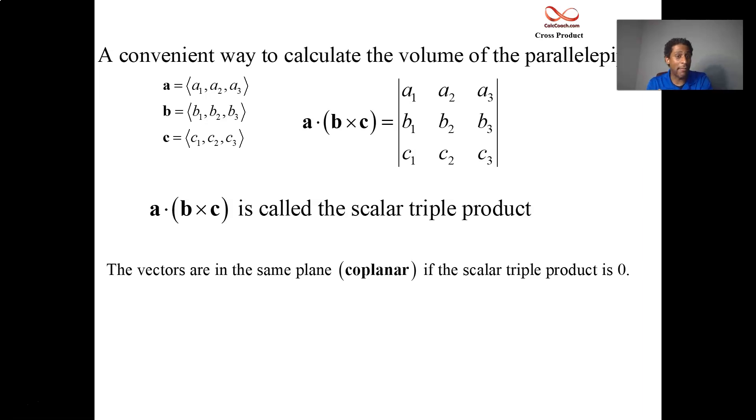And so this calculation, a dot b cross c, is going to be zero only when the three vectors are in the same plane. If they are coplanar, then you'll end up with a zero for this volume.